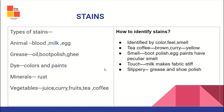Types of stains include: animal stains such as blood, milk, and egg; grease stains like oil, boot polish, and ghee; dye, color, and paints; mineral stains like rust; and vegetable stains like juice, curry, fruits, tea, and coffee. To identify a stain: by color — tea and coffee give a brown color, curry gives yellow; by smell — wood polish, egg, and paints have a peculiar smell; by touch — milk makes fabric stiff, while grease and shoe polish give a slippery feel.